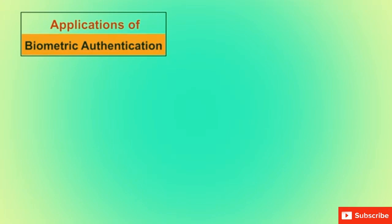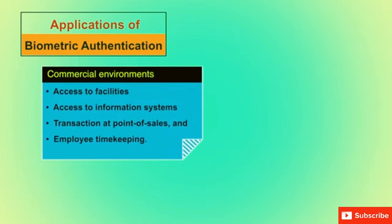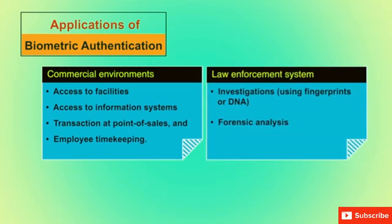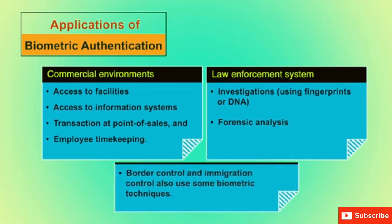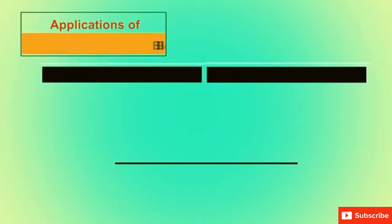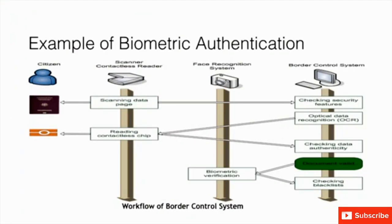Applications of biometric authentication include: in commercial environments — access to facilities, access to information systems, transactions at point of sales, and employee timekeeping. In law enforcement — investigations using fingerprints or DNA and forensic analysis. Border and immigration control also use biometric techniques. For example, in an automatic border control e-gate system, an e-passport is scanned using a contactless reader, security features are checked, the chip is read for data authentication, and finally biometric verification is performed by a face recognition system. If everything matches, the citizen is allowed.